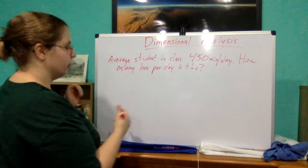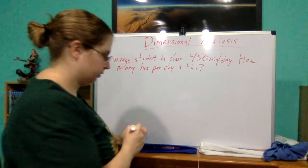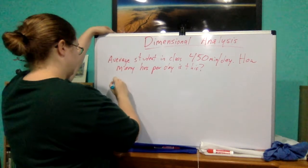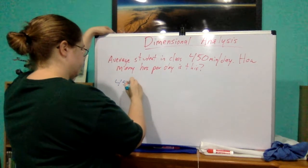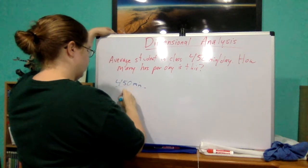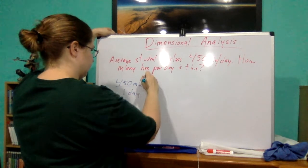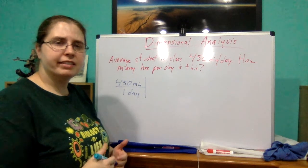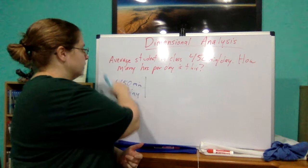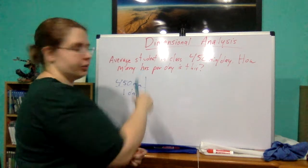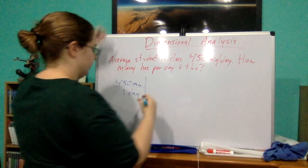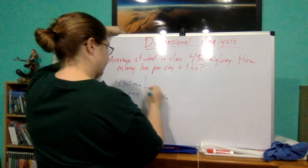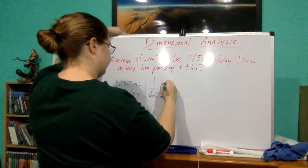So we know the minutes per day, we want to figure out the hours per day. Alright. So again, start with what we know. We know 450 minutes per one day. Alright. But we want to cancel out the minutes and we want to convert it to hours. So there are 60 minutes in one hour.